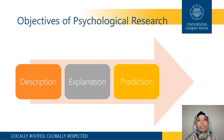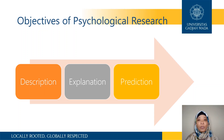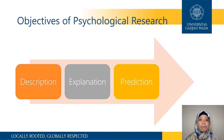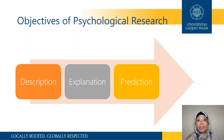After description and explanation comes prediction. You can predict that when people have to stay at home 24 hours a day, seven days a week, for many months, then you can predict that when people are confined in their home, the majority would just engage in gadget-related behaviors.